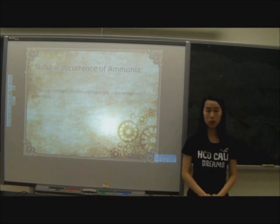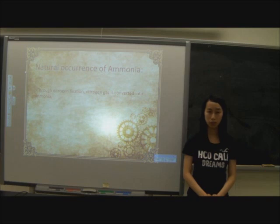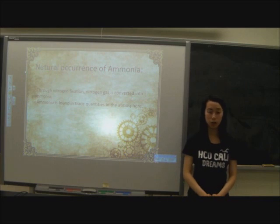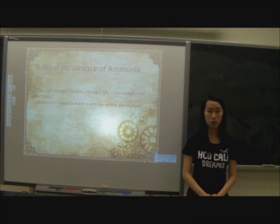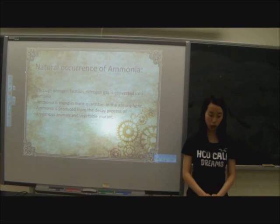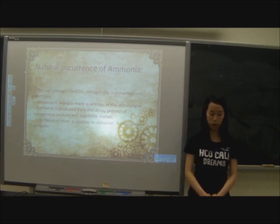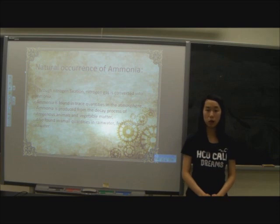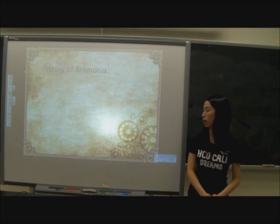There are other ways to convert nitrogen into ammonia, and the natural way to do that is through nitrogen fixation. Natural occurrences of ammonia are found in trace quantities in the atmosphere, produced from the decay process of nitrogenous animal and vegetable matter. Ammonia and ammonium are also found in trace quantities in seawater, rainwater, and all fertile soil.